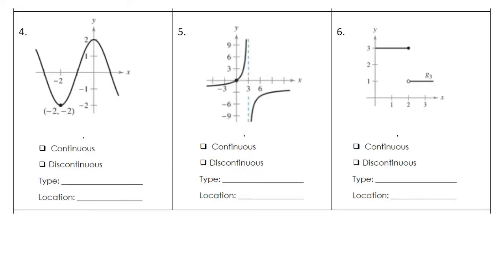Continuing on to number four, this would be a continuous function — no holes or gaps there. Number five is discontinuous, and it looks like we have an infinite discontinuity again, and that occurs at x equals 3.